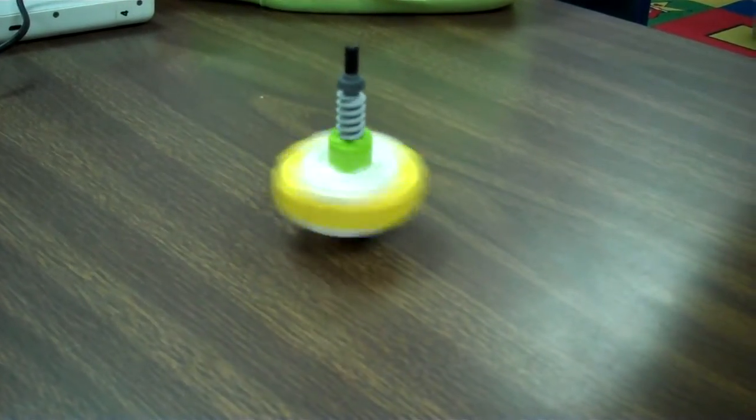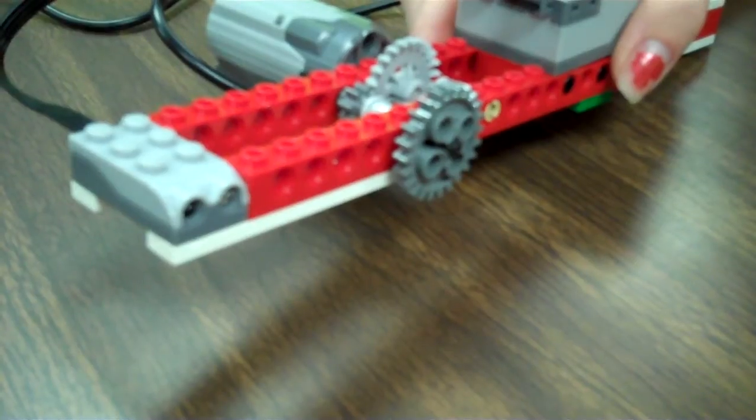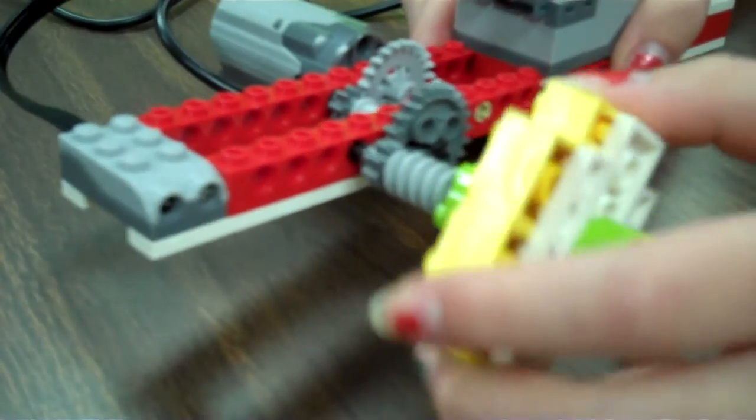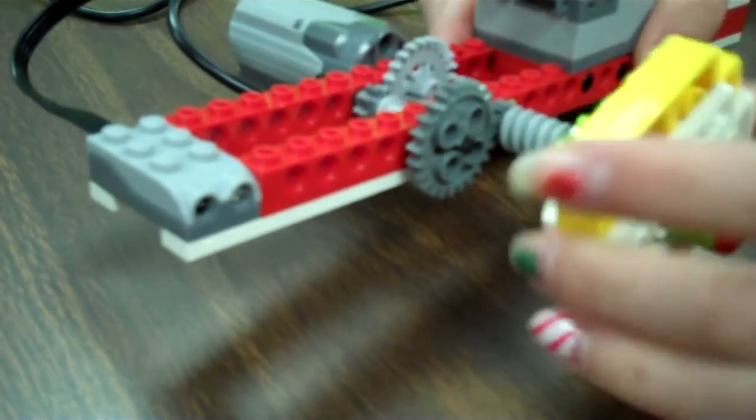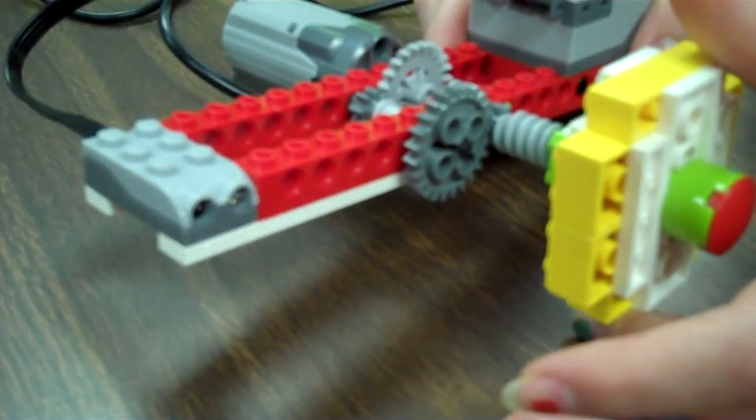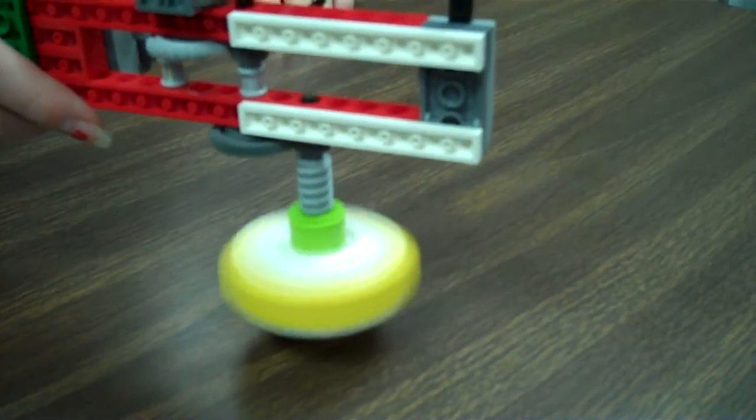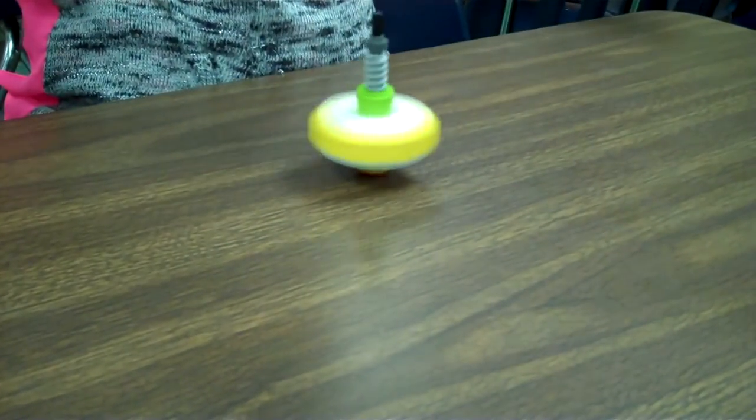To get your top to spin, you must first insert the top into the Smart Spinner so that the gears mesh. Then hold the spinner parallel to the surface that your top will be spinning on, and start your program. When you're ready, quickly lift the spinner straight up and watch your top spin.